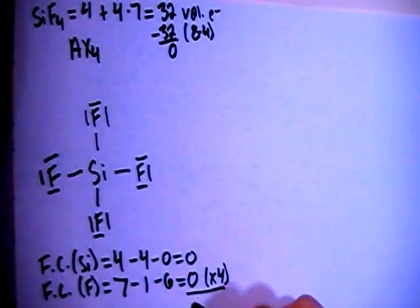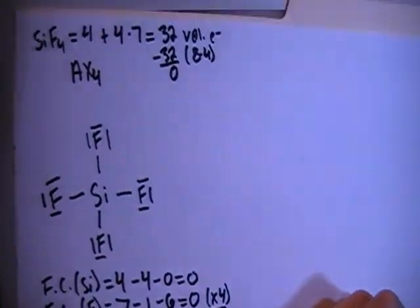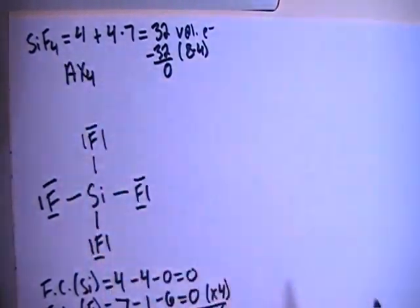Times that by 4 because there are 4 of them and that's still going to add up to 0 overall which is what we need because this is not an ion. This is a neutrally charged compound.